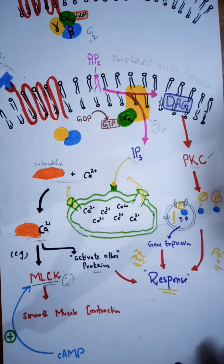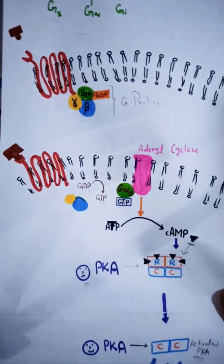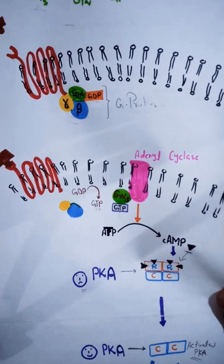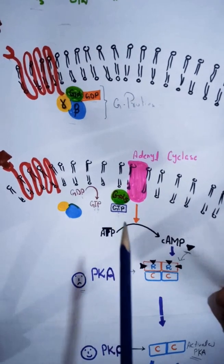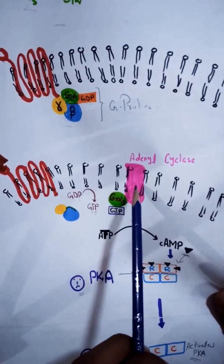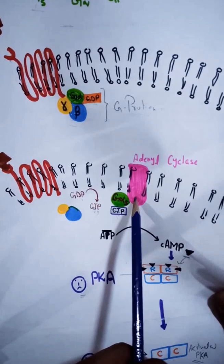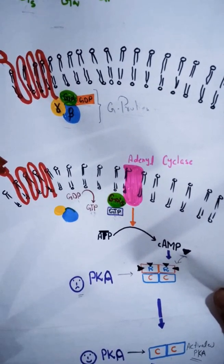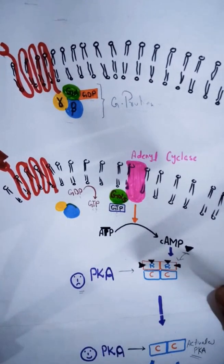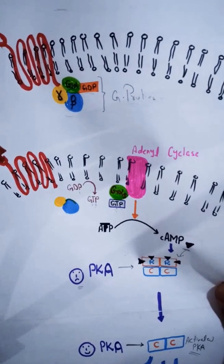Now let's talk about the GI protein. GI protein acts exactly opposite to the GS protein. The alpha subunit of GS protein, when separated, attaches to adenylyl cyclase and causes its activation. But the alpha subunit of GI protein will not activate adenylyl cyclase — instead it will inhibit it. So adenylyl cyclase is inhibited by the alpha subunit of GI protein and activated by the alpha subunit of GS protein.